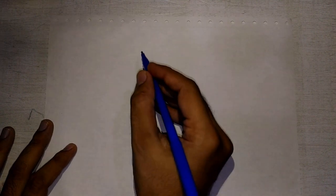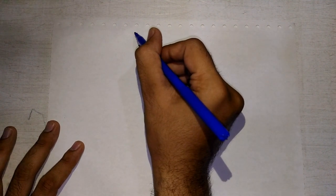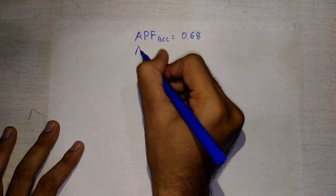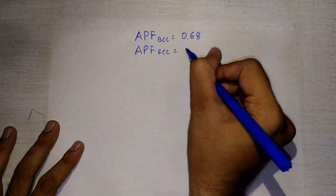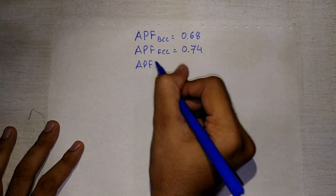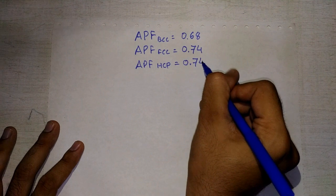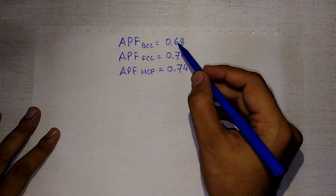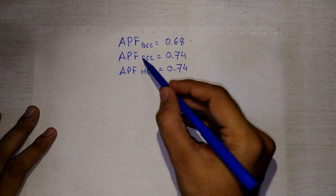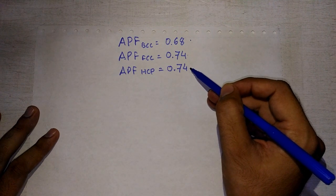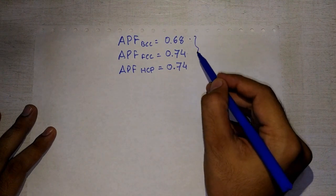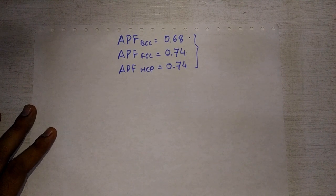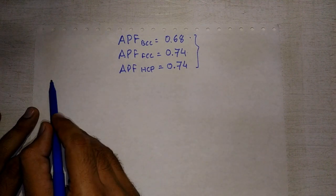To summarize the APF calculations: APF for BCC is 0.68, APF for FCC is 0.74, and APF for HCP is also 0.74. From these values we can say that there is more empty space in the case of BCC compared to FCC and HCP inside the unit cell. We will use these values later when discussing types of solid solutions.